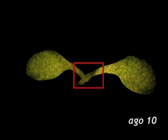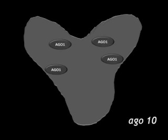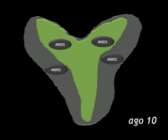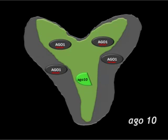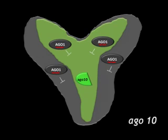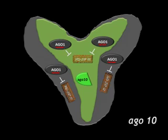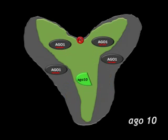The reasoning is as follows. In AGO10 mutants, microRNA 166 and 165 are loaded into AGO1, which is the master repressor of microRNA targets. The increased AGO1–microRNA 166/165 assembly decreases class III HDZip transcription factors, leading to the terminal differentiation of the shoot apical meristem.